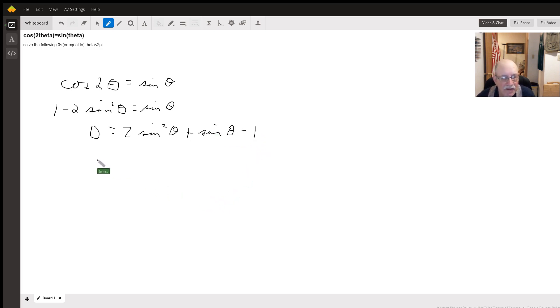That will factor into 2 sine theta minus 1 times sine theta plus 1. That gives me negative 1, and that gives me 2 sine theta minus sine theta. So we got that.